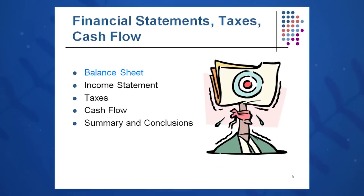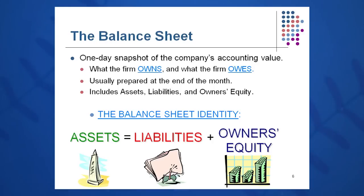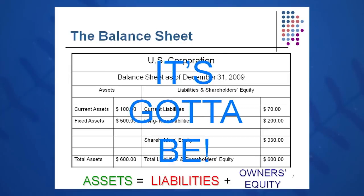Let's move into the balance sheet. The balance sheet is a one-day snapshot of the company's accounting value and economic health — is the company healthy or not? On the left side is what the company owns, and on the right side, what the company owes. It is usually prepared on the last day of the month: March 31st, April 30th, May 31st, June 30th, and so on.